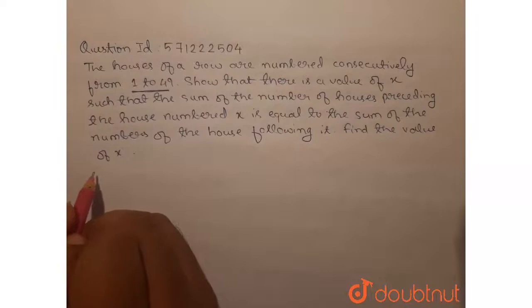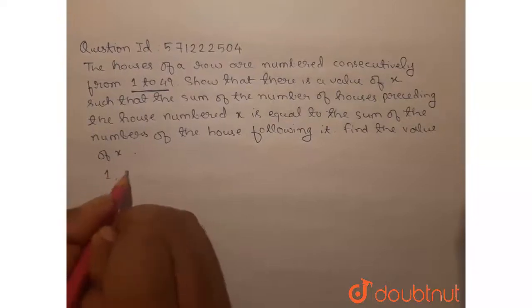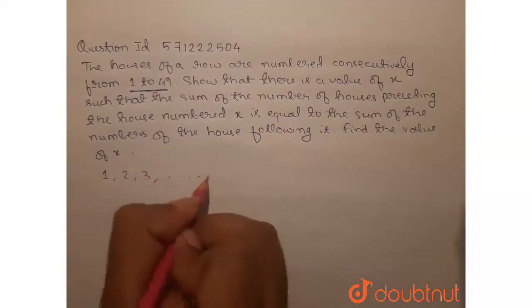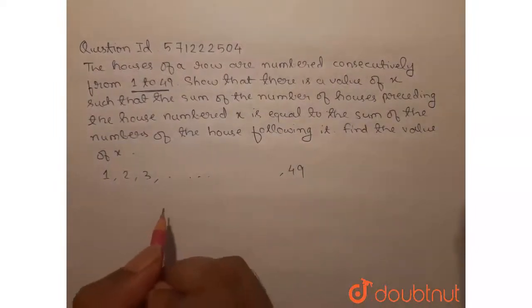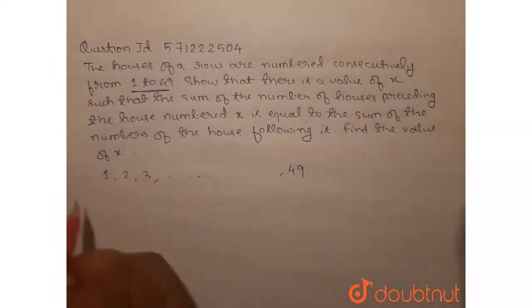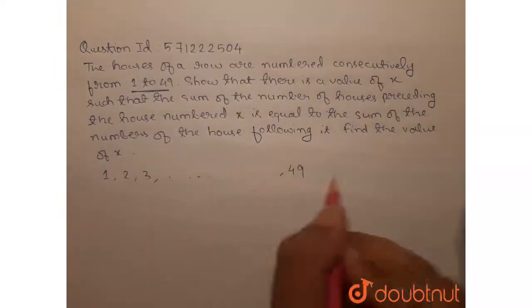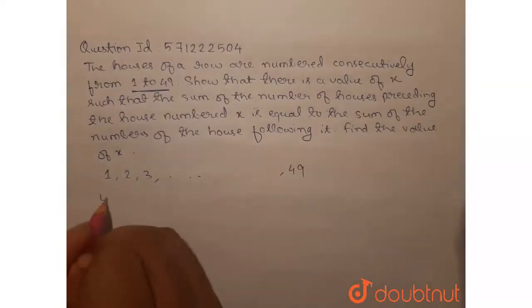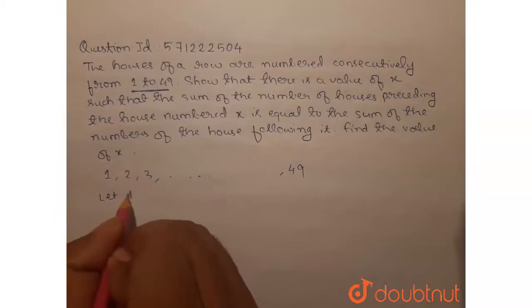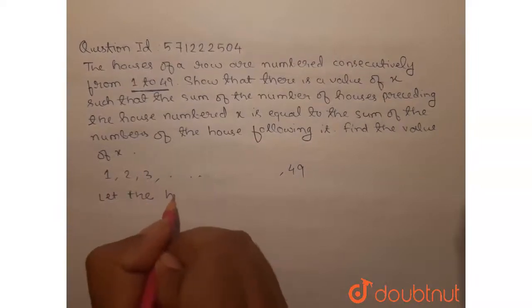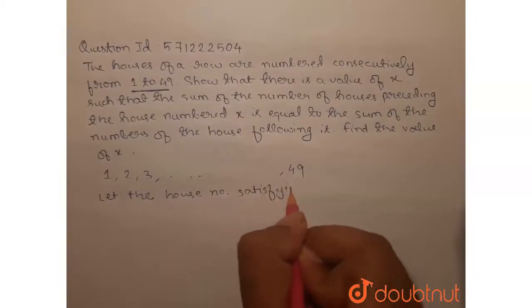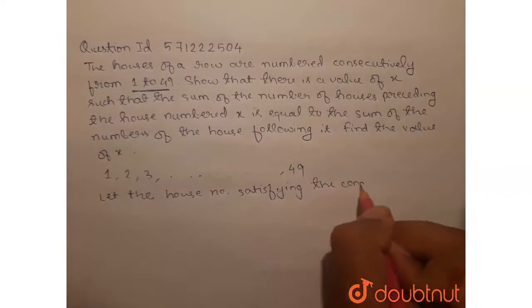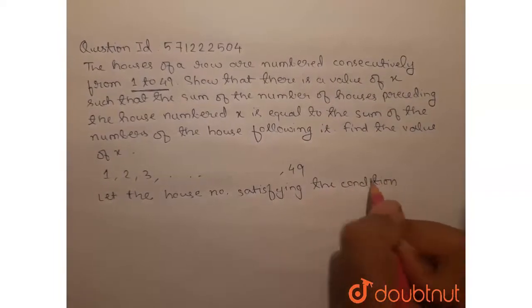So what we have is 49 houses in a row. The houses are numbered 1, 2, 3 till 49. Now we need to find that there is a number x such that the sum of all the numbers preceding it is equal to the sum of all the numbers following it. So let the house number satisfying the condition be x.